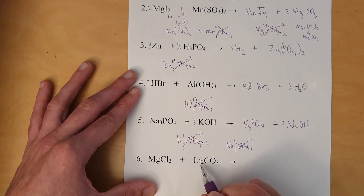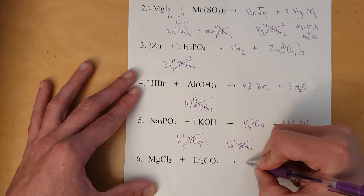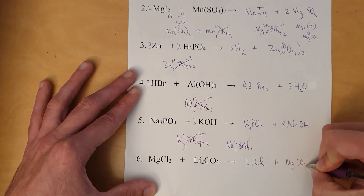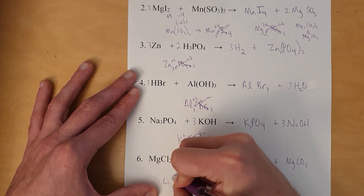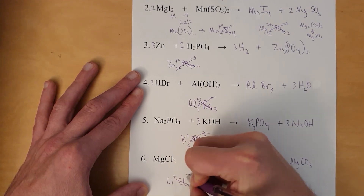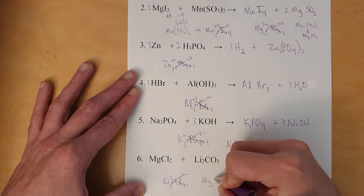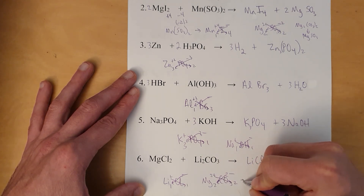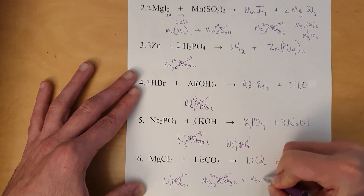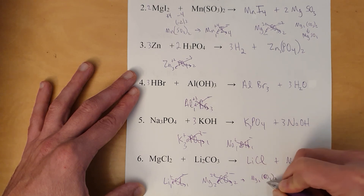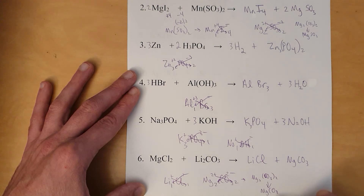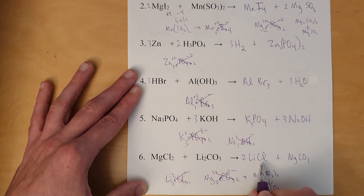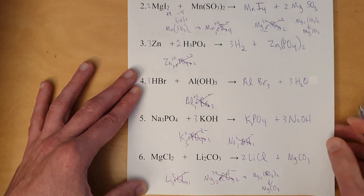Magnesium chloride and lithium carbonate: magnesium and lithium switch places, giving lithium chloride and magnesium carbonate MgCO₃. Lithium is +1, chlorine is −1 — one of each, so LiCl is correct. Magnesium is +2 and carbonate is −2 — a two-to-two ratio reduces to one-to-one, so MgCO₃ is correct. Balance: one magnesium, one magnesium; two chlorine, two chlorine; two lithium, two lithium; one carbonate, one carbonate. Done.